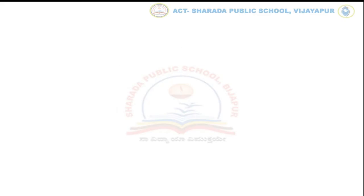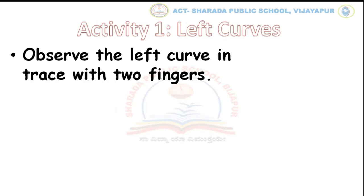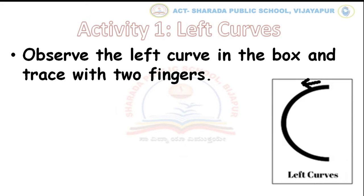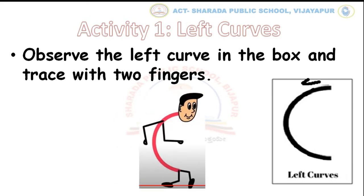Now let us do our first activity, that is left curve. Children, let us observe the given picture of left curve. For tracing, use two fingers — that is index and middle fingers — and start tracing from top to bottom. Slightly trace it down to the left side. Now tell me, this is left curve. This curve is looking forward, so it is left or forward curve.